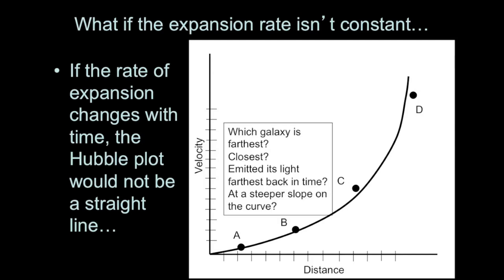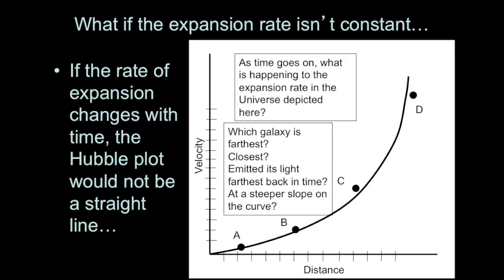We can also ask about the steepness of the curved plot, because the slope tells us the expansion rate — a higher slope means faster expansion. In this plot, galaxy D is on a part of the curve with a higher slope, meaning the universe was expanding fastest at that time. Galaxy A is where the slope is lower, so the expansion rate was slower at A's time. This means that as time has gone on in this particular universe, the expansion rate has slowed down.